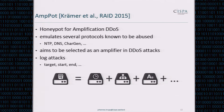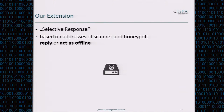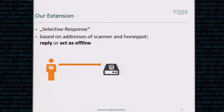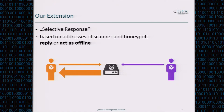For this work, we extended Ampot with what we call selective response. The basic idea is that based on the addresses of both the scanner and the honeypot, the honeypot will either reply or act as offline. So if the orange scanner sends a request, the honeypot sends back a reply, but if the purple scanner sends a request, the honeypot will not reply.